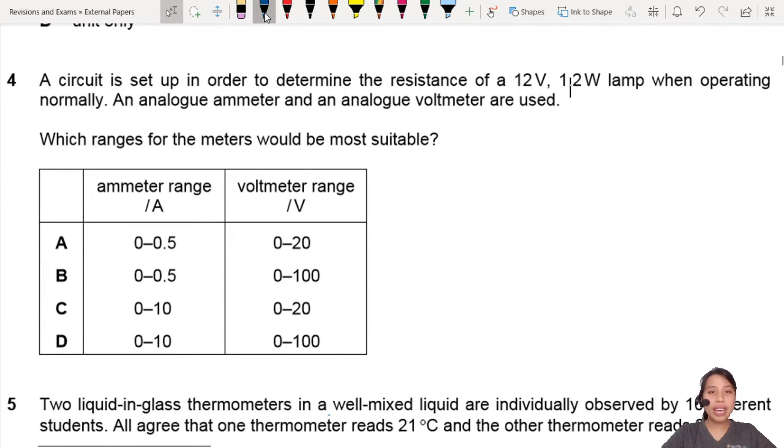So you have a lamp you want to test but you need to use some meters here. One of the circuits that you could set up is something like this: a battery or power source connected to the lamp, and you need to include the ammeter somewhere to measure current.